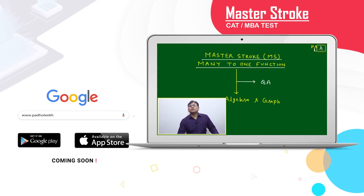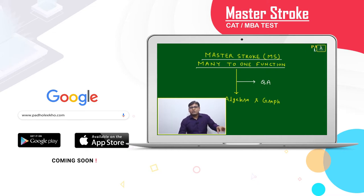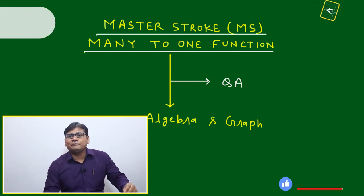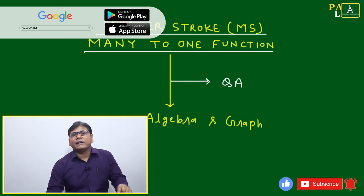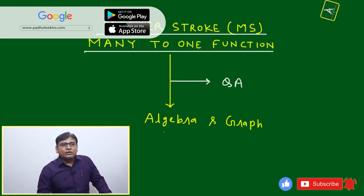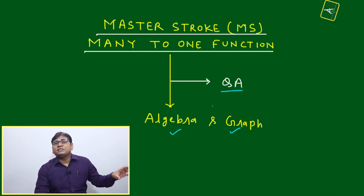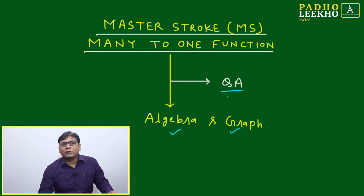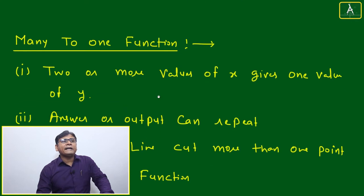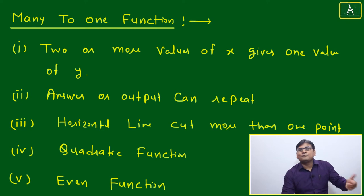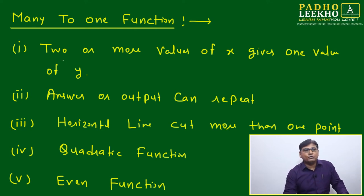Welcome to the master's talk. Today I am going to discuss many-to-one functions — how to identify a many-to-one function based on the graph, the algebraic equation, or if it is given in the form of a set. We will be able to identify this function as many-to-one. There are a few criteria we have to follow; if those criteria are satisfied, we can say it is a many-to-one function.